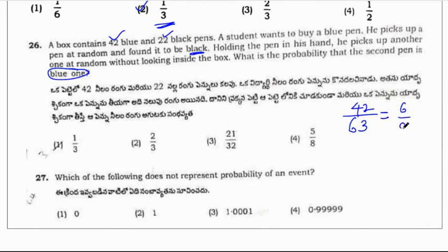Actually 42 plus 22 gives you 64. But why I am taking 63? It's simple because he has taken one pen, that black pen and did not keep the pen in the box. And the pen needed is blue. So there are 42 blue pens. So 42 divided by 63 is the answer, which is 2 by 3. Correct option is 2.